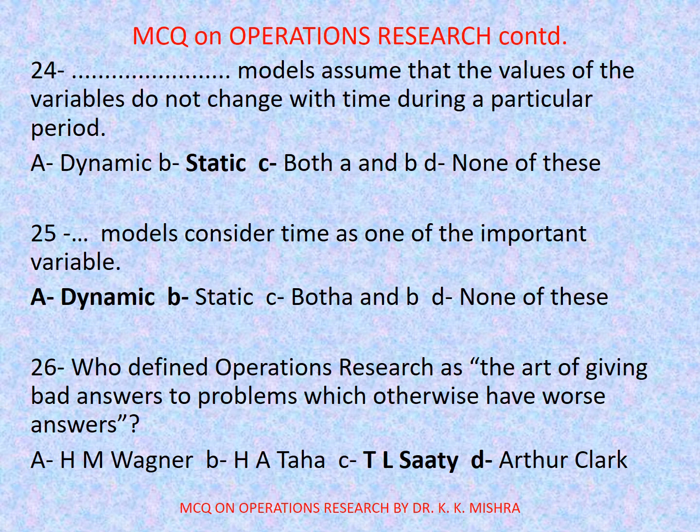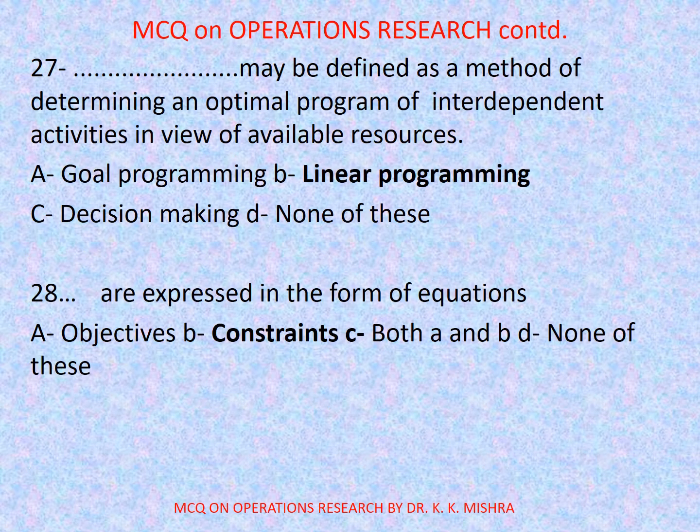Question number 25: Dash models consider time as one of the important variables — options are: A. Dynamic, B. Static, C. Both A and B, D. None of these. Correct option is A: Dynamic. Question number 26: Who defined operations research as 'the art of giving bad answers to problems which otherwise have worse answers'? Options are: A. H.M. Wagner, B. H.A. Taha, C. P.L. Satie, D. Arthur Clark. Correct option is C: P.L. Satie.